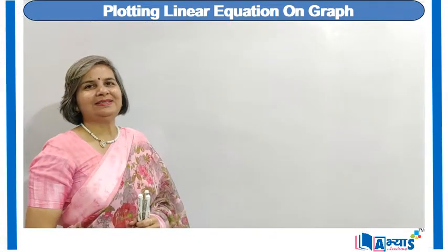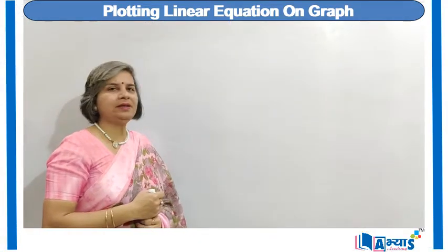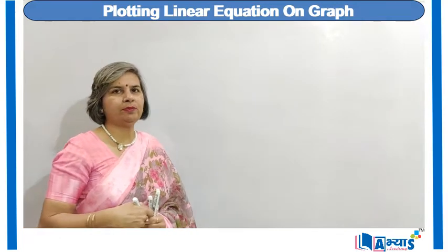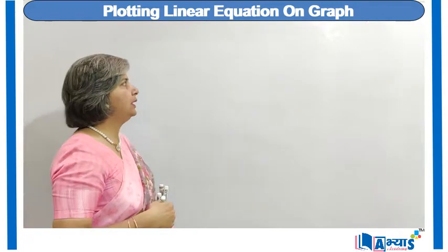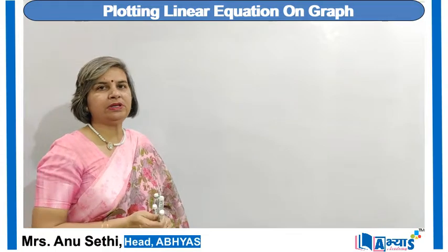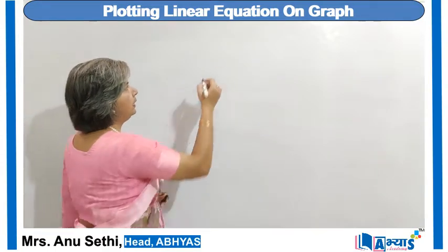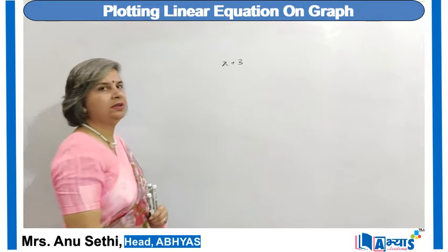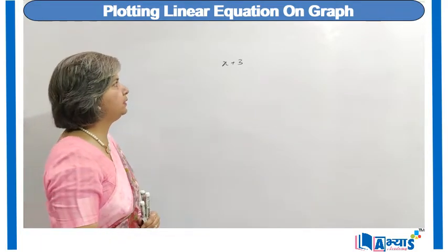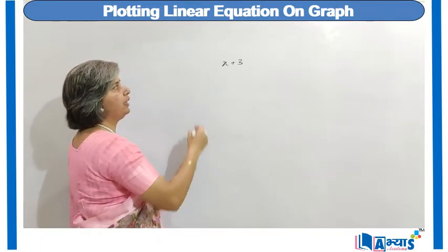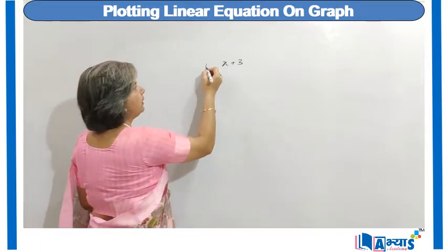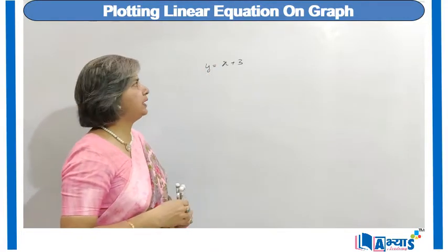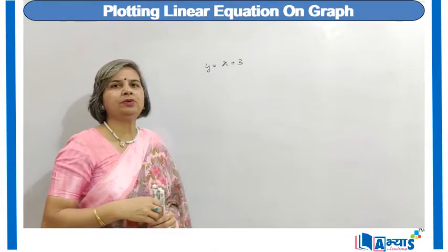Now let us discuss the concept of representing a polynomial on a graph — the graphical representation of a polynomial. Let us first consider a polynomial of degree 1. Suppose we have the polynomial x plus 3 and we want to represent it on a graph. For this, we will assign this polynomial to y, so it becomes y is equal to x plus 3. The first step is to assign the polynomial to a variable.